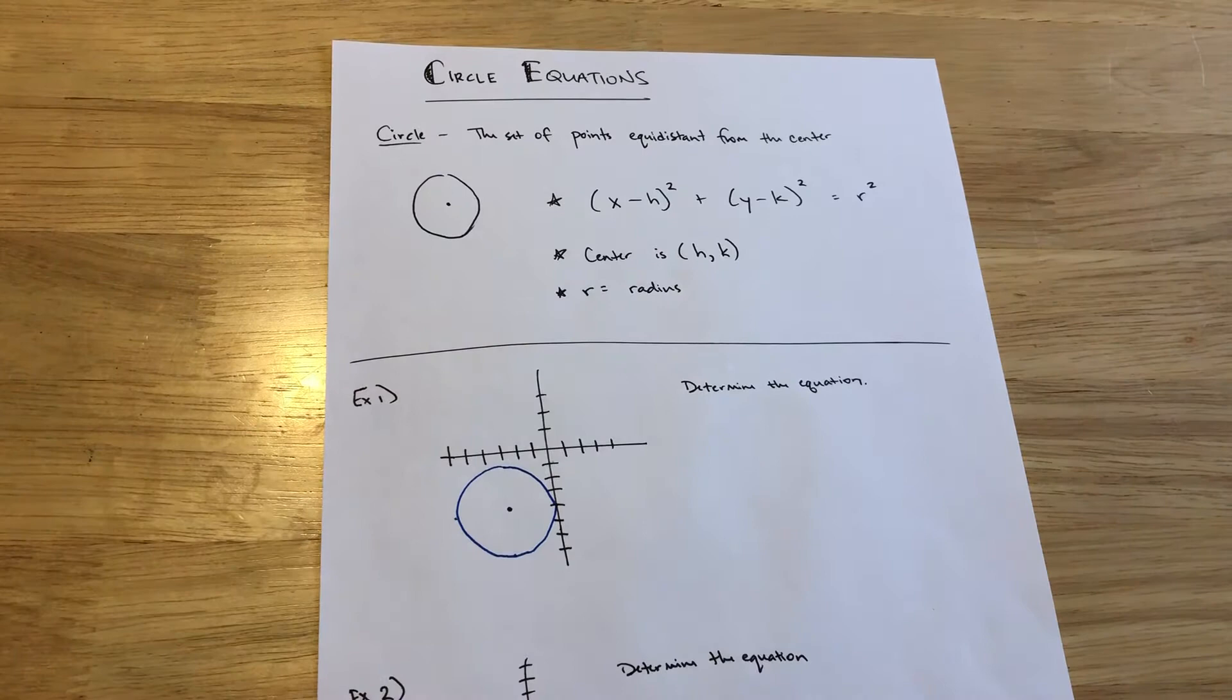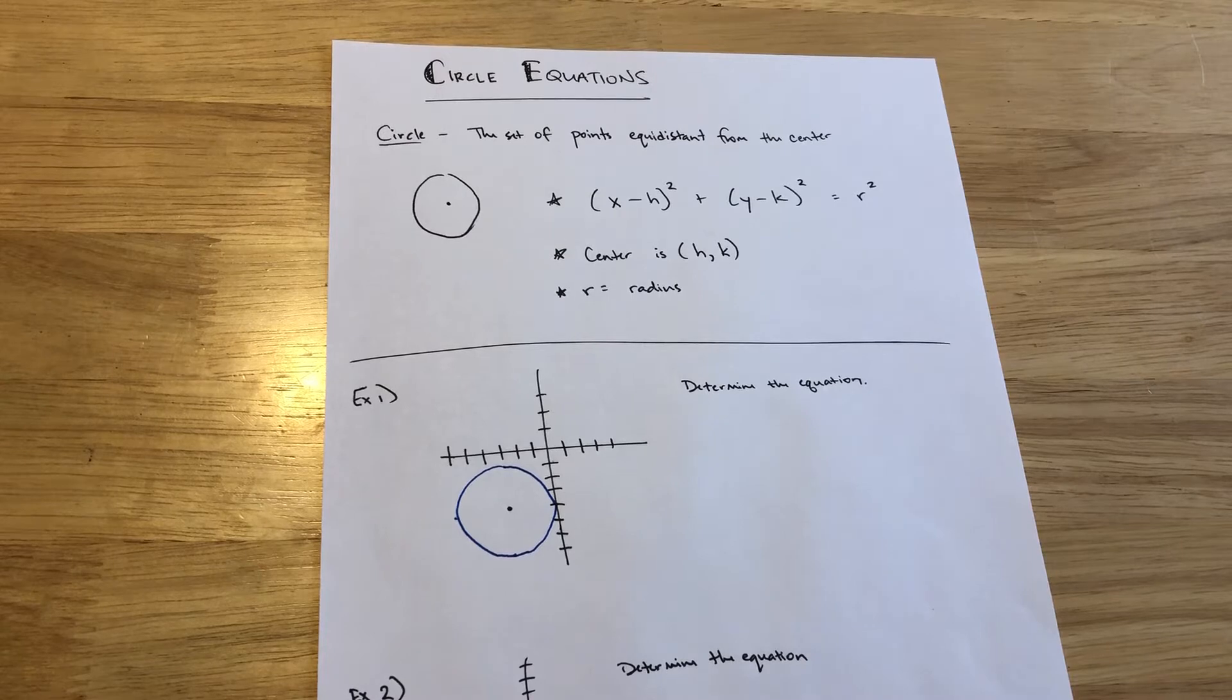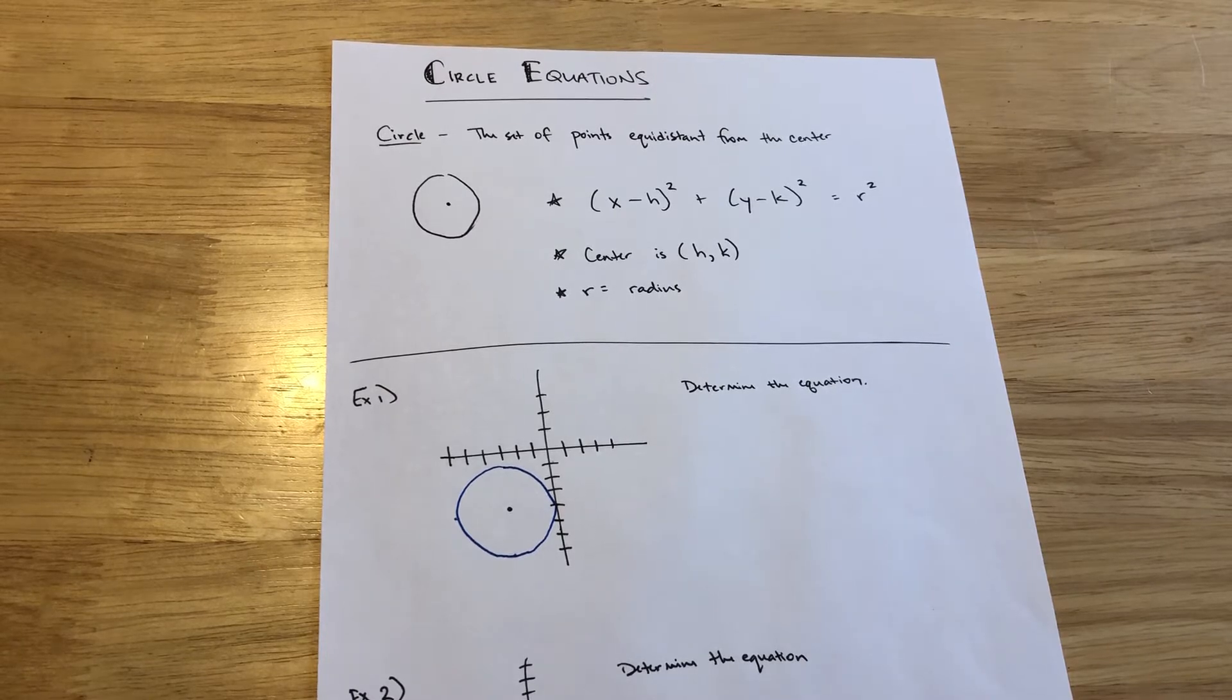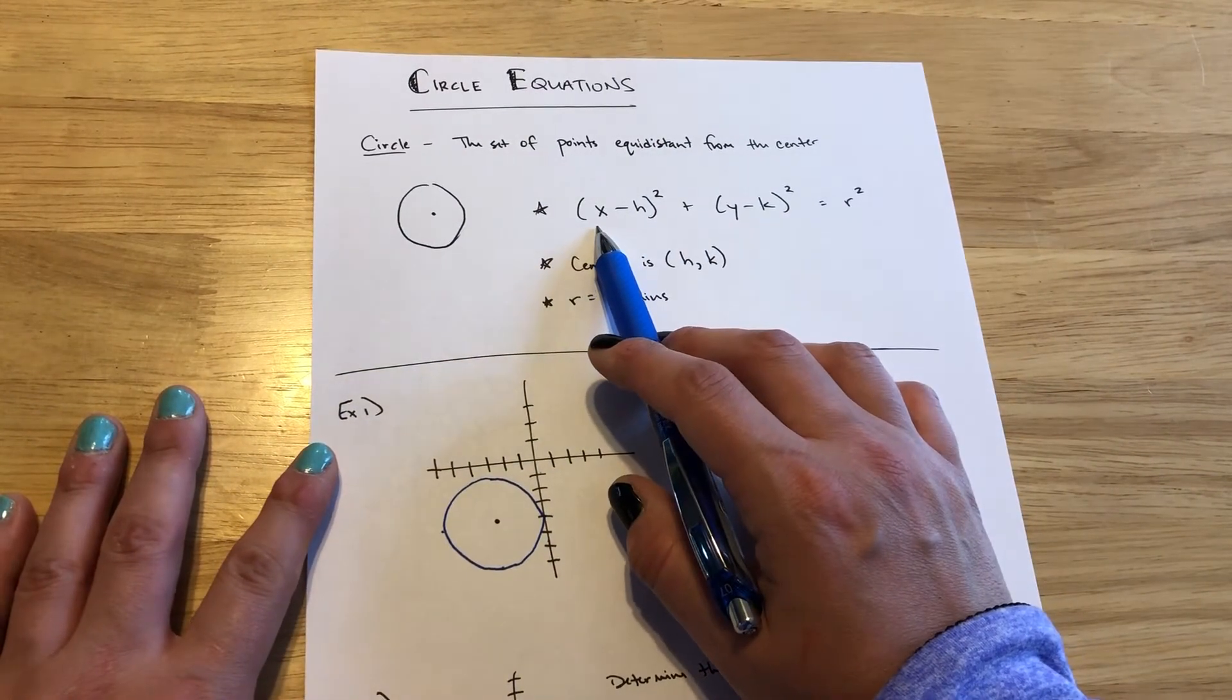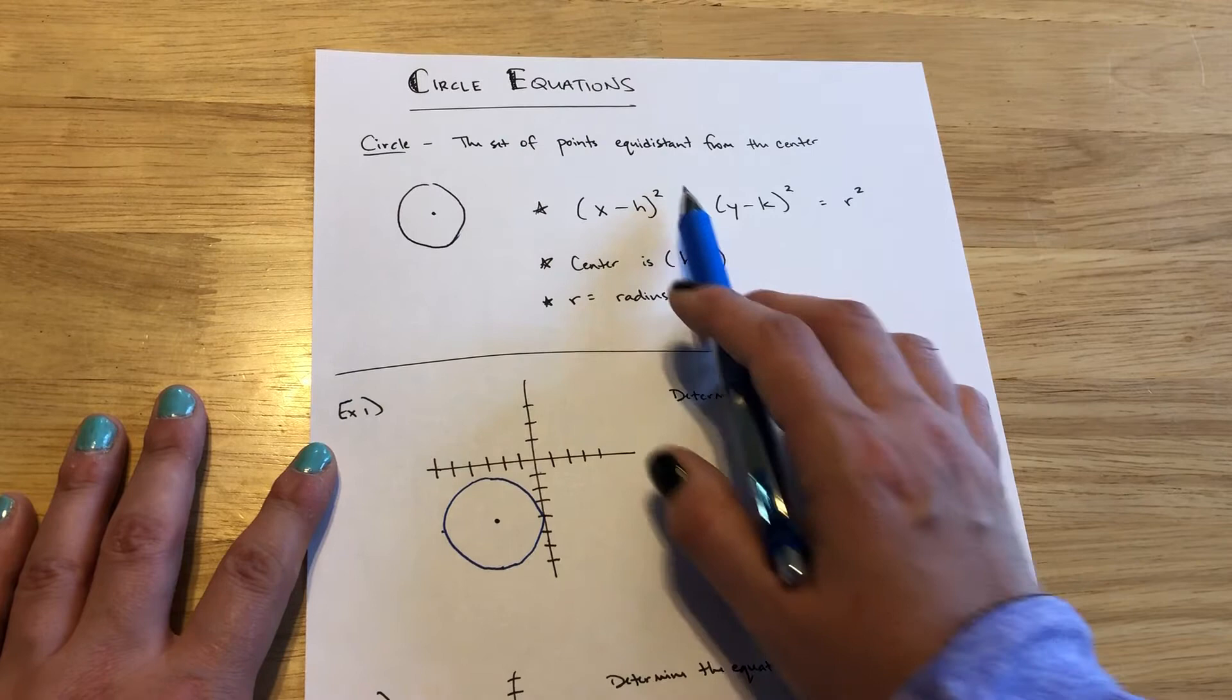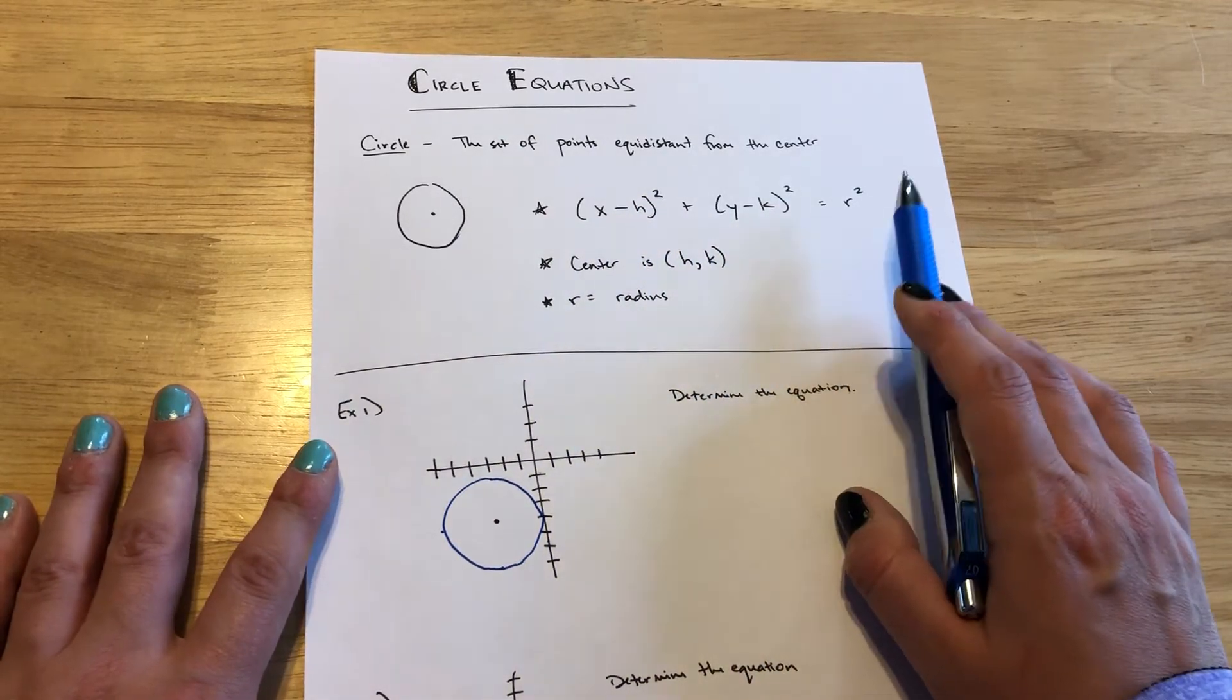So if we want points to be equidistant from a center location, that means that the distance formula is in play here and that it's set to be a certain distance. So how does that look in an equation? Well it looks like this: in parentheses x minus h squared plus y minus k squared and it's equal to r squared.